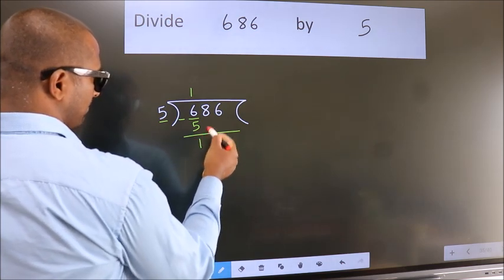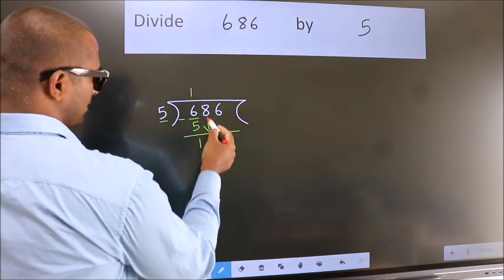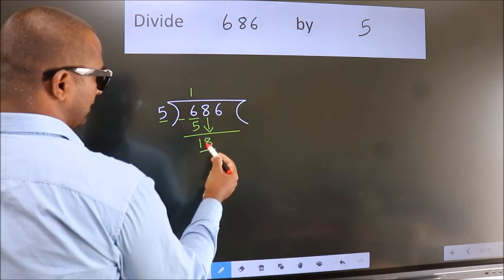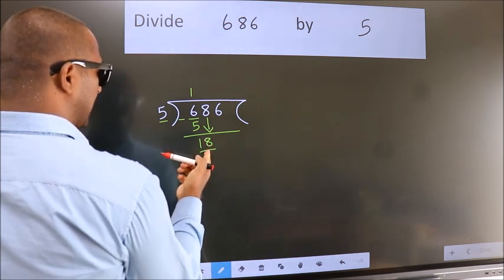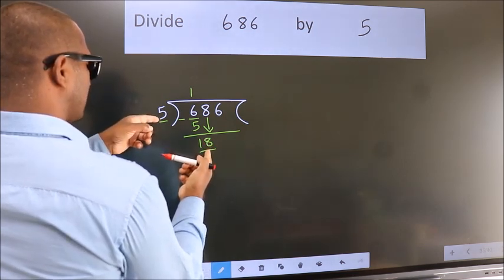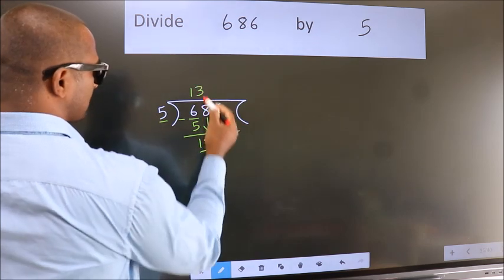After this, bring down the beside number. So 8 down. So 18. A number close to 18 in 5 table is 5 threes, 15.